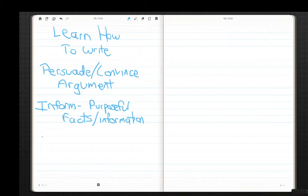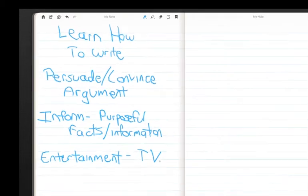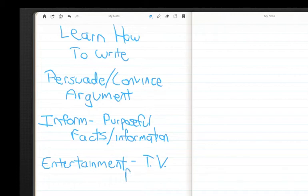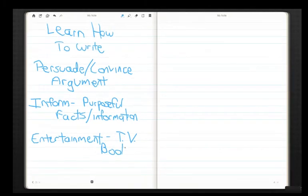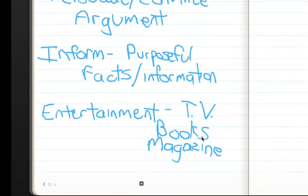The last reason that people write is for entertainment purposes. For example, when I watch television, those people have scripts that they've read and are acting out. This happens in TV, books, and even in magazines. Sometimes articles are written strictly for entertainment purposes, not necessarily for information.